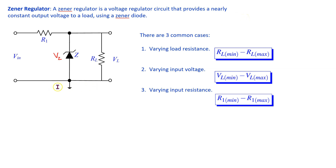This is the basic circuit configuration of a Zener regulator. It comprises two resistors: R1, which is the input resistance, and RL, which is the load resistance. A Zener diode is connected in parallel across the load resistor. The output voltage VL is measured across the load resistance and VIN is the DC input voltage to the Zener regulator circuit.